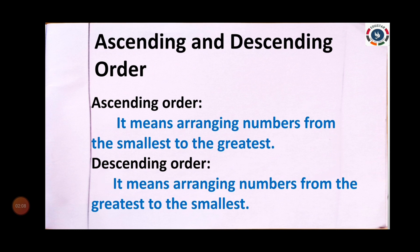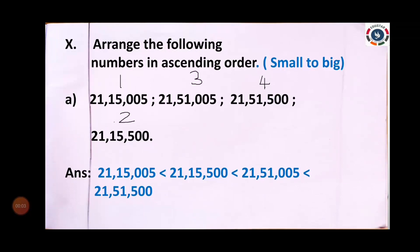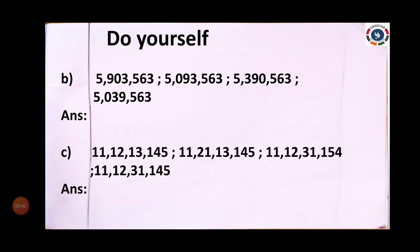Then ascending order and descending order. Ascending order means arranging numbers from the smallest to the greatest. Descending order means arranging numbers from the greatest to the smallest. Domulator 10 — arrange the following numbers in ascending order (small to big). A: 21,15,005; 21,51,005; 21,51,500; 21,15,500. Answer: 21,15,005 < 21,15,500 < 21,51,005 < 21,51,500. I gave the first sum; the next two you do yourself.